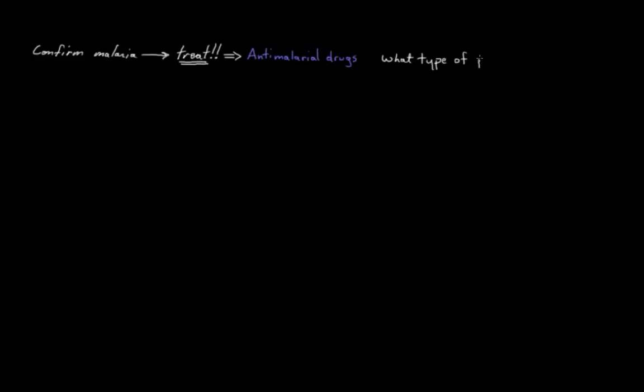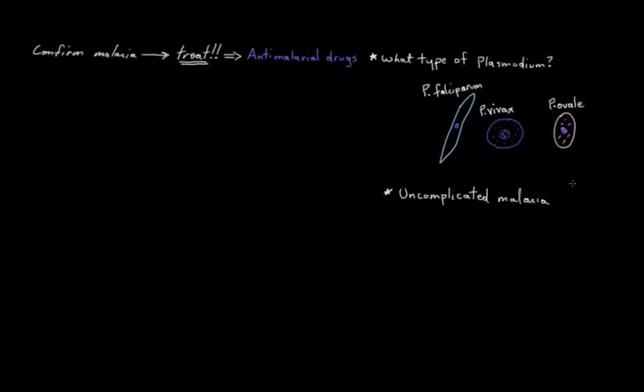We need to know what type of plasmodium is causing the infection, because some subtypes will respond to drugs that others might not. We'll need to know how the patient's doing - is this uncomplicated malaria with flu-like symptoms, fevers and chills, or is this severe malaria with systemic life-threatening symptoms? We'll also need to know if these parasites are resistant to any treatments. Maybe the infection was picked up in a part of the world known to have treatment-resistant malaria.